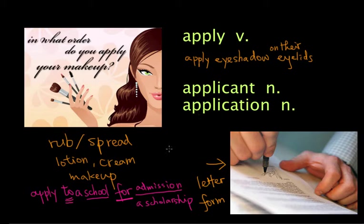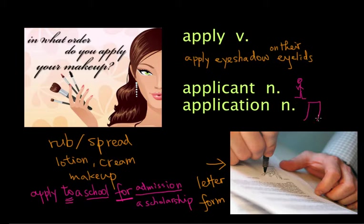So you apply to a school, university, or company for something that you want — that is to apply. Now let's go over the two nouns. An applicant is a person who applies. And an application is basically a letter or a form that you need when you want to apply — or maybe there are many blanks for you to fill in. That is application.